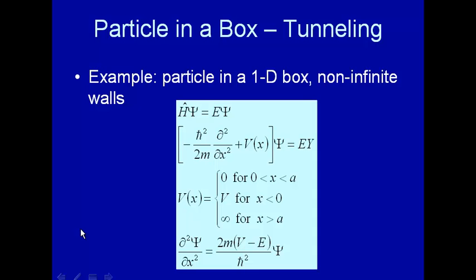Here we're going to consider an extension of the particle in a 1D box model. In the 1D box we've considered so far, the potential on either end of the box goes to infinity. What will happen if, instead of making the potential go to infinity, we make it go to some finite value, V?